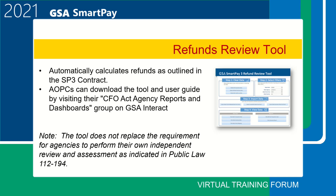The GSA SmartPay developed an automated refund review tool for agencies to automatically calculate refunds on a quarterly basis. The Center for Charge Card Management's Data Management Division developed this tool to aid customer agencies in recalculating and reviewing refunds paid from their contractor bank. The tool follows the refund calculation business rules as defined by the GSA SmartPay 3 master contract. As stated in Public Law 112-194, purchase and travel accounts must be reviewed by their agency for accuracy. Please note, this tool does not replace the requirement for agencies to perform their own independent review as indicated in Public Law 112-194.